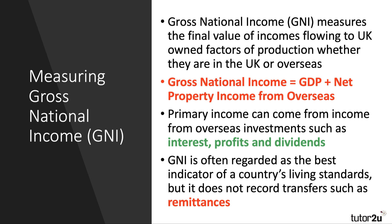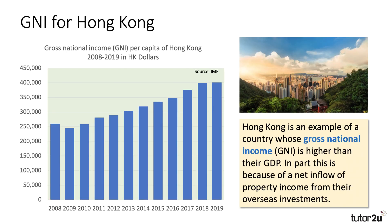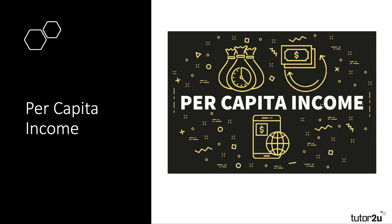GNI doesn't technically record transfers such as remittance incomes. A good example is Hong Kong, whose GNI is actually bigger than its GDP. Here are the figures: Hong Kong is a high-income country in part because there's a large net inflow of property income from overseas investments. The Hong Kong dollar is fixed against the US dollar at approximately 8.5 to 1, so divide by about 8 to get the US dollar figure.